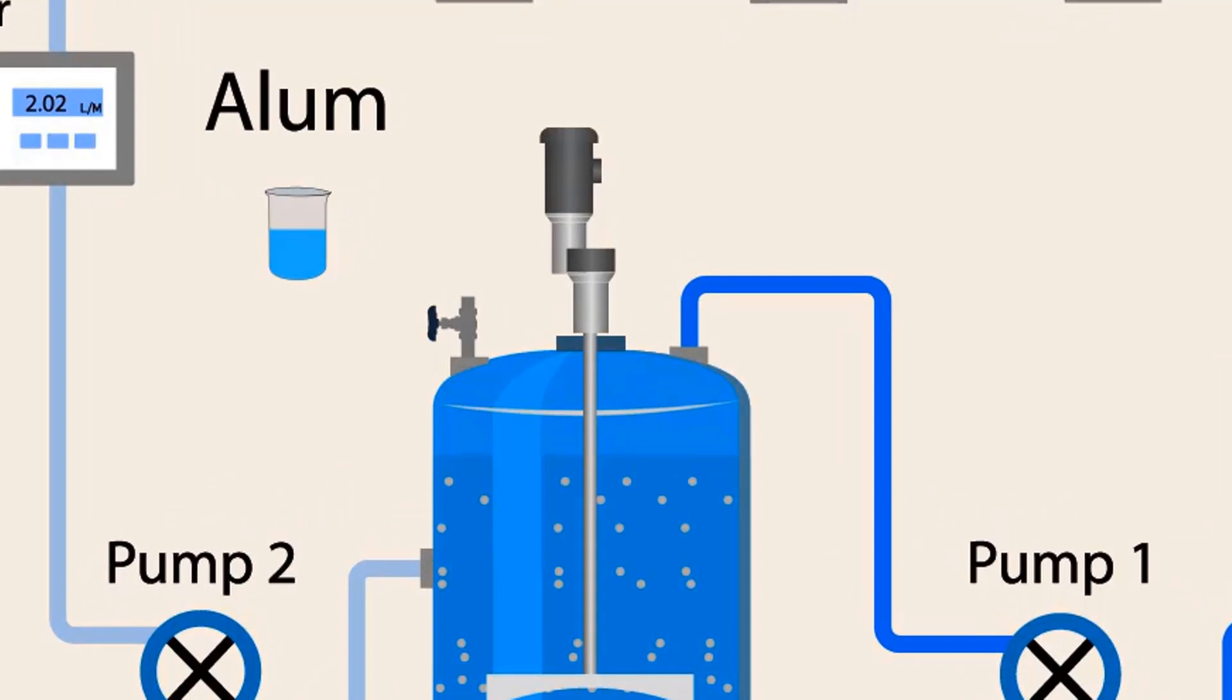we have to add coagulant into the water. Most commonly used coagulants are ferric chloride, ferric sulfate and aluminum sulfate. In this case, we are adding aluminum sulfate as a coagulant.